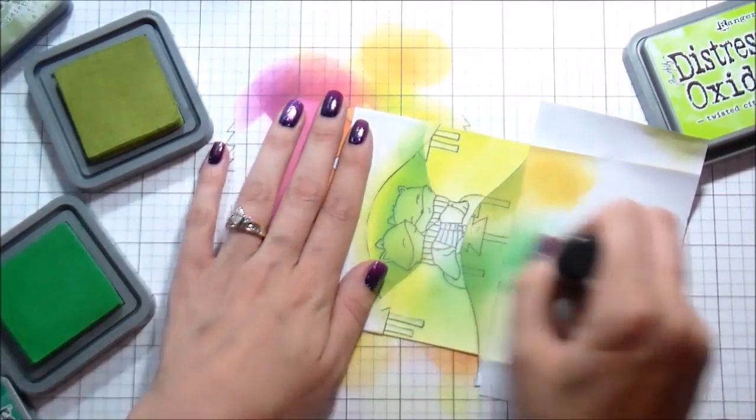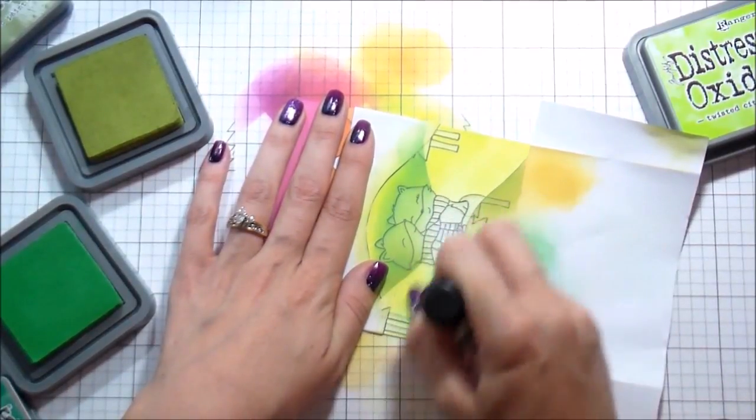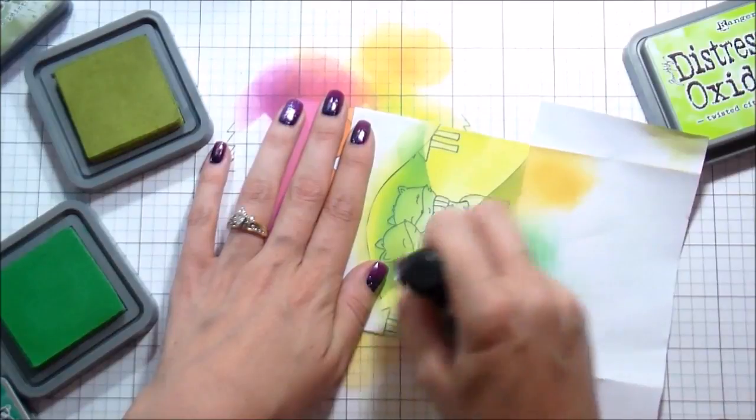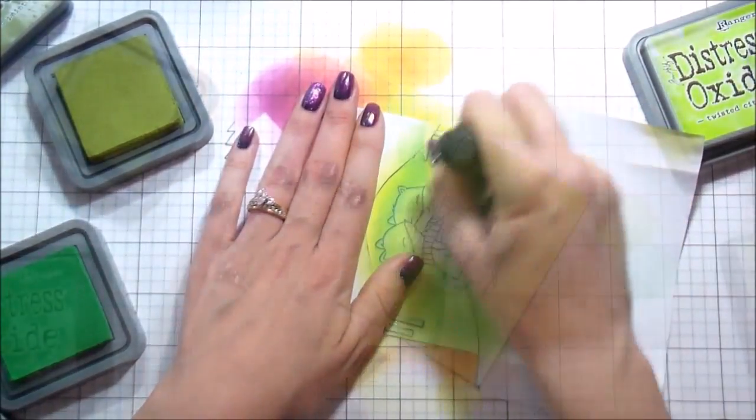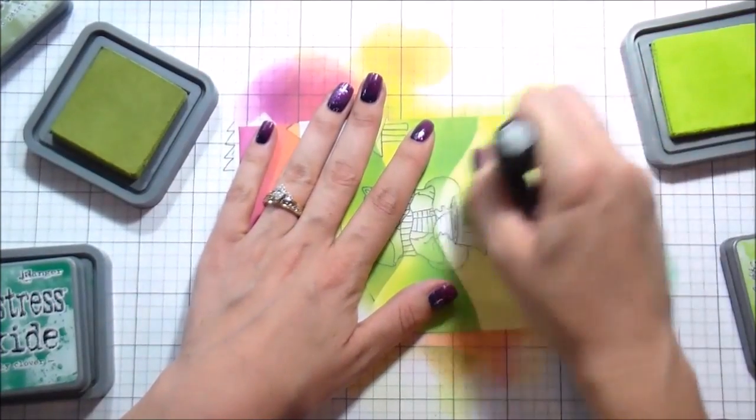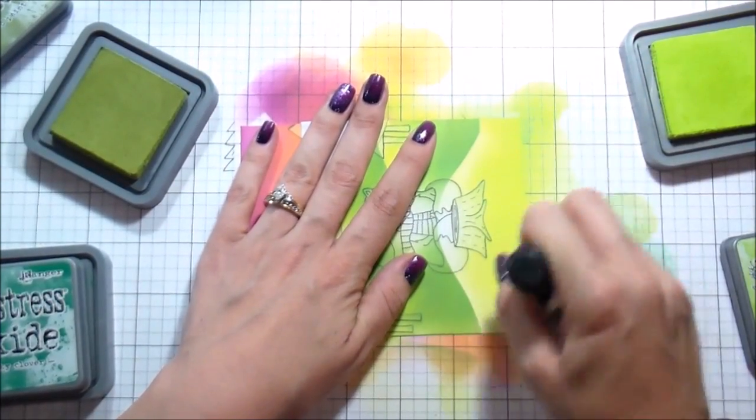And then again, I'm going to add that shading behind by leaving that lightest color, the Twisted Citron, as the highlight on top of the hill. It gives them the look of being in the forefront. So like they're sitting in this hilly valley with these pine trees in the background.